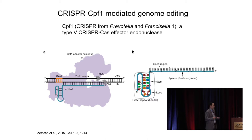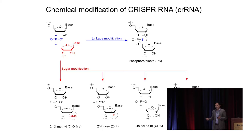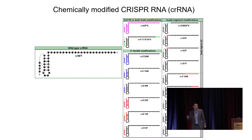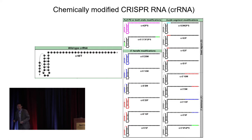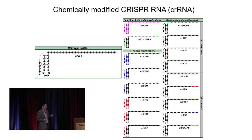We introduced various chemically modified nucleotides into the guide RNA — at the full length, five prime end, three prime end, seed region, or three prime end only — then conducted evaluation studies and selected the best modification pattern. We used the same strategy to modify the messenger RNA encoding CPF1 and identified the best combination.